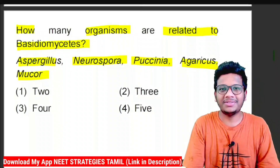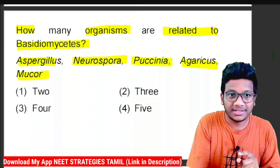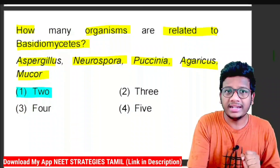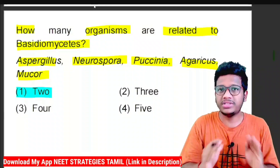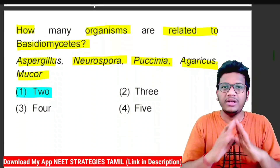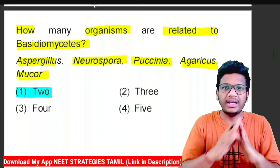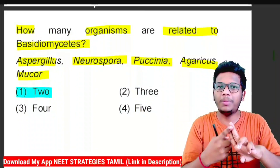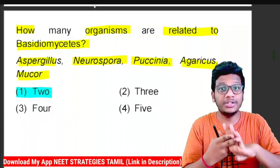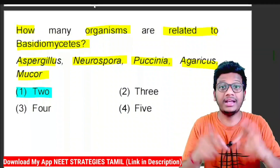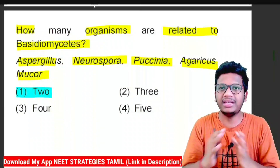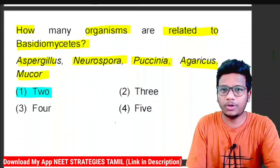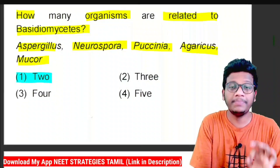The correct answer for this question is option A — only two organisms. Now it's the most important time. In fungi, all classes — Phycomycetes, Ascomycetes, Basidiomycetes, and Deuteromycetes — everything is important. I will teach you as a fast track revision.